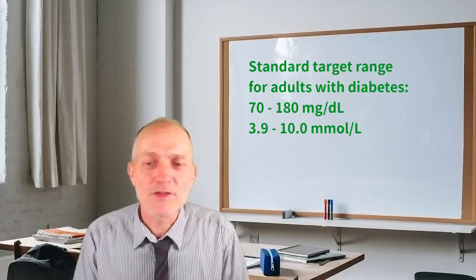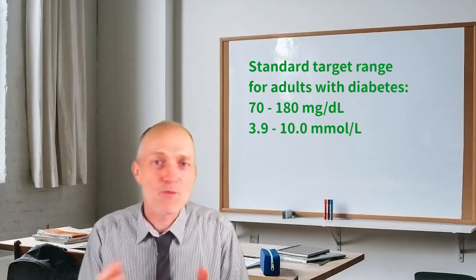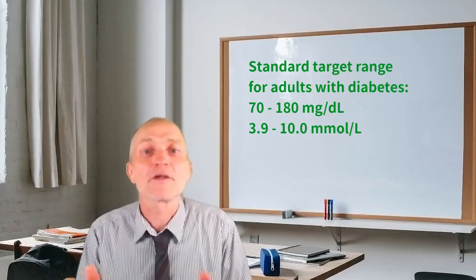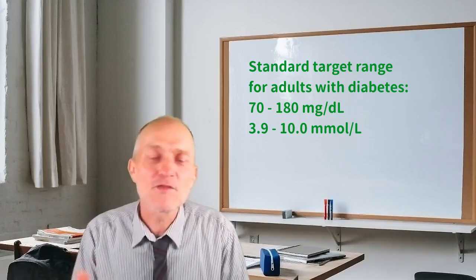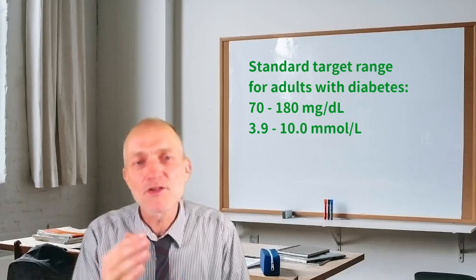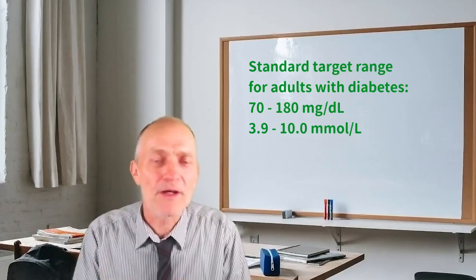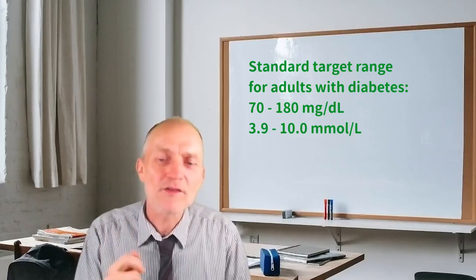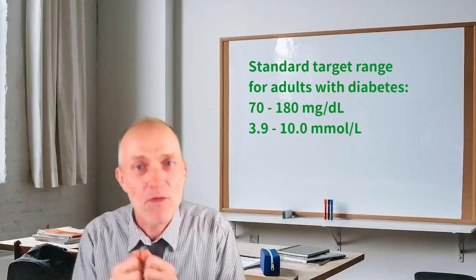There are two different scales for blood glucose, and which one you use will depend on the country where you live. In this video, I will mention both scales. The 70 to 180 range, or 3.9 to 10 range, is not the normal range in people without diabetes.